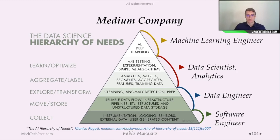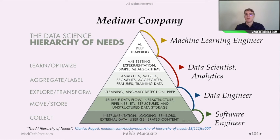In a big company, we still have the software engineer and the data engineer, but the data scientist — or analytics role — does only analytics, small machine learning algorithms, or A/B testing. The heavy part of machine learning, which could be seen as deep learning, is done by a machine learning engineer.